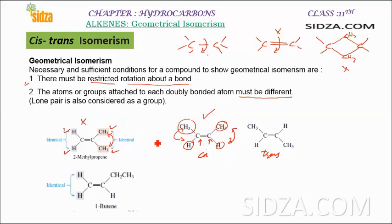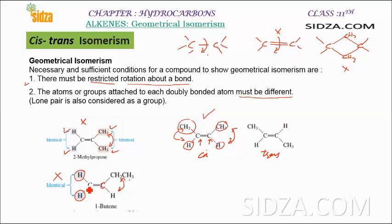Even if one carbon has different groups attached — say ethyl and hydrogen — but the other carbon has the same groups on both sides, geometrical isomerism is still not possible. Both double-bonded carbon atoms must each have different groups attached. Like here: hydrogen and methyl on one carbon, hydrogen and methyl on the other.